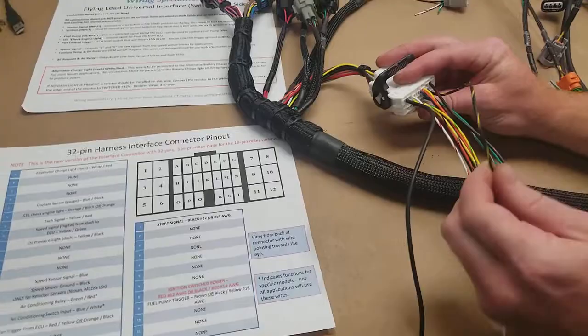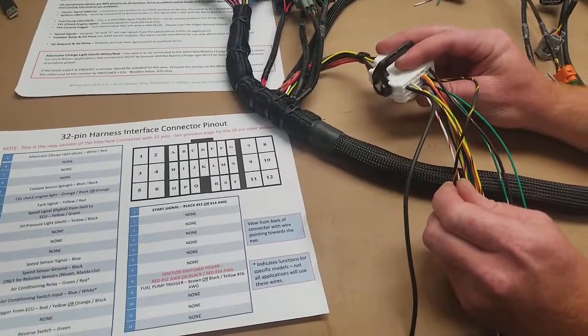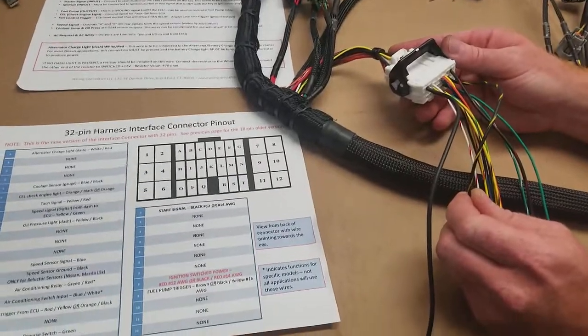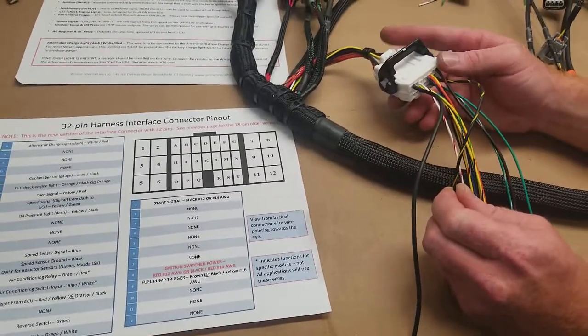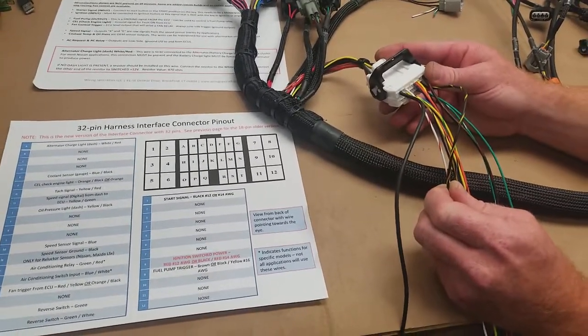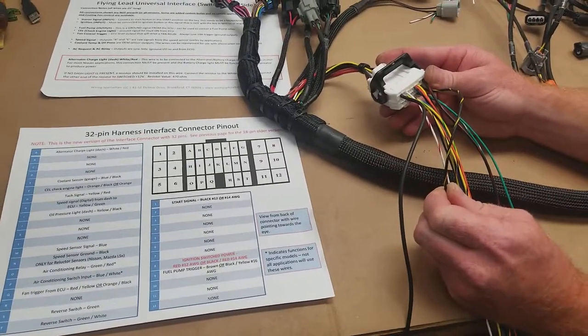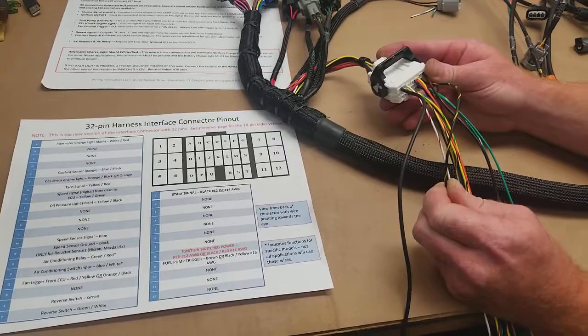We've also got our fuel pump wire here. This is a switched ground output from our harness. This is going to go to a relay. It has to go to a relay. You cannot use this to ground the pump. This is solely made to ground the relay. If you run it to the pump, it will damage the ECU.